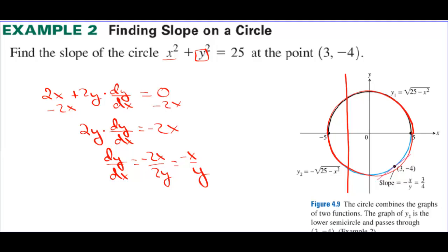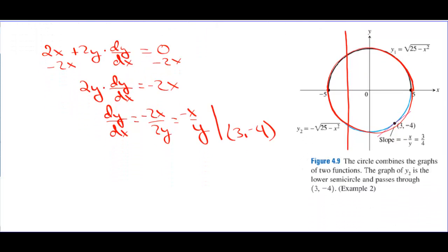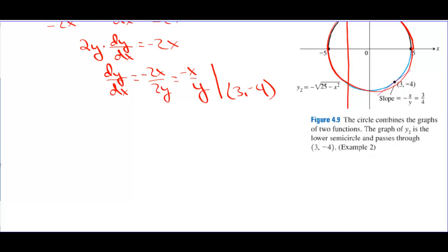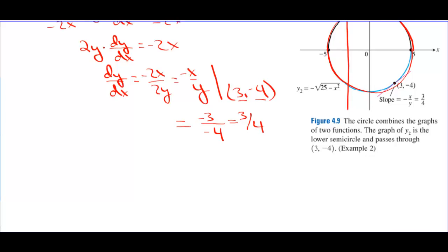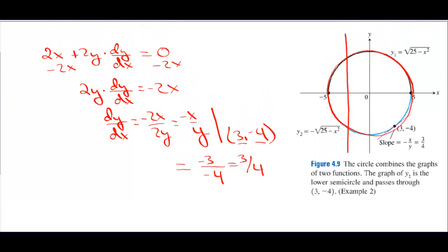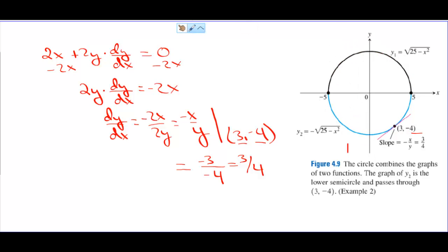We subtract 2x and divide by 2y, giving dy/dx = -x/y. To evaluate at (3, -4), we plug in x = 3 and y = -4, so the slope is 3/4. Looking at the graph at the point (3, -4), the tangent line has a slope of up 3 and over 4.